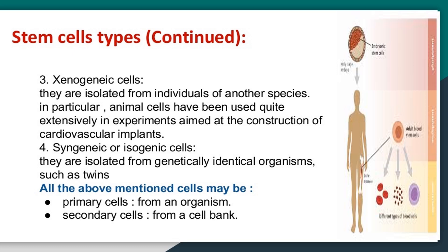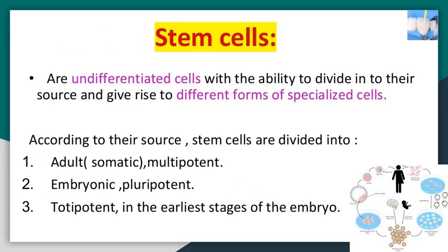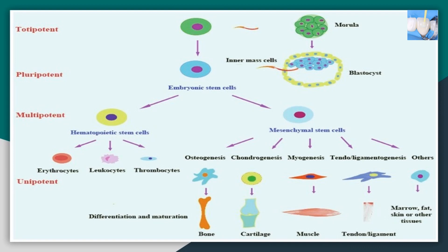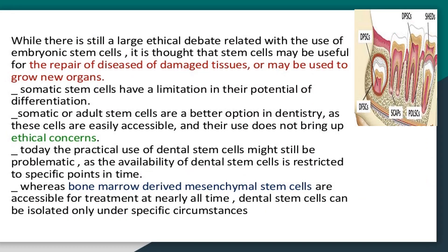Stem cells are undifferentiated cells with the ability to divide and give rise to different forms of specialized cells. According to their source, stem cells are divided into: adult somatic multipotent stem cells, embryonic pluripotent stem cells, and totipotent stem cells found in the earliest stages of the embryo.